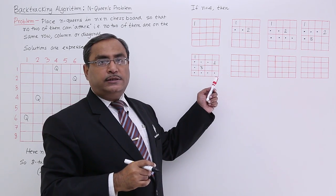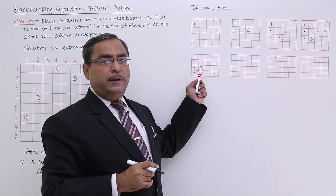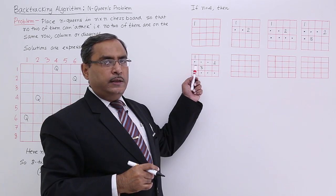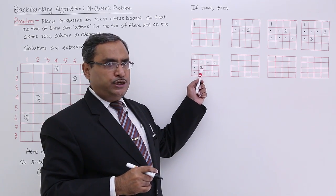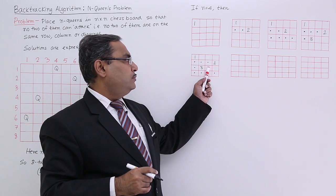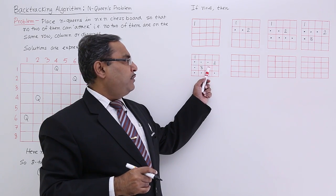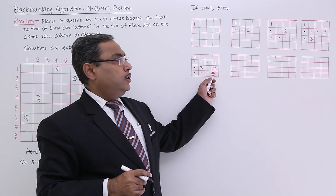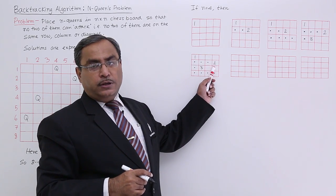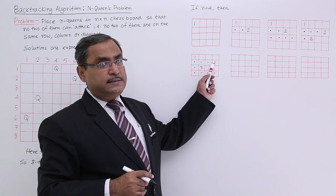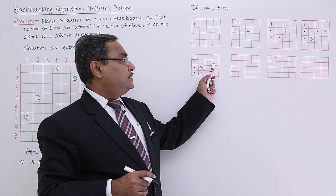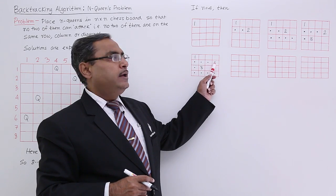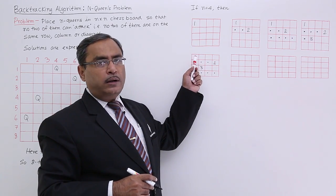I shall backtrack and try placing the third queen in some other position. After trying all options, the third queen cannot fit anywhere — some cells are in the same diagonal or same column. So I ask the second queen, but second queen has no other option. Then I backtrack to queen number 1.